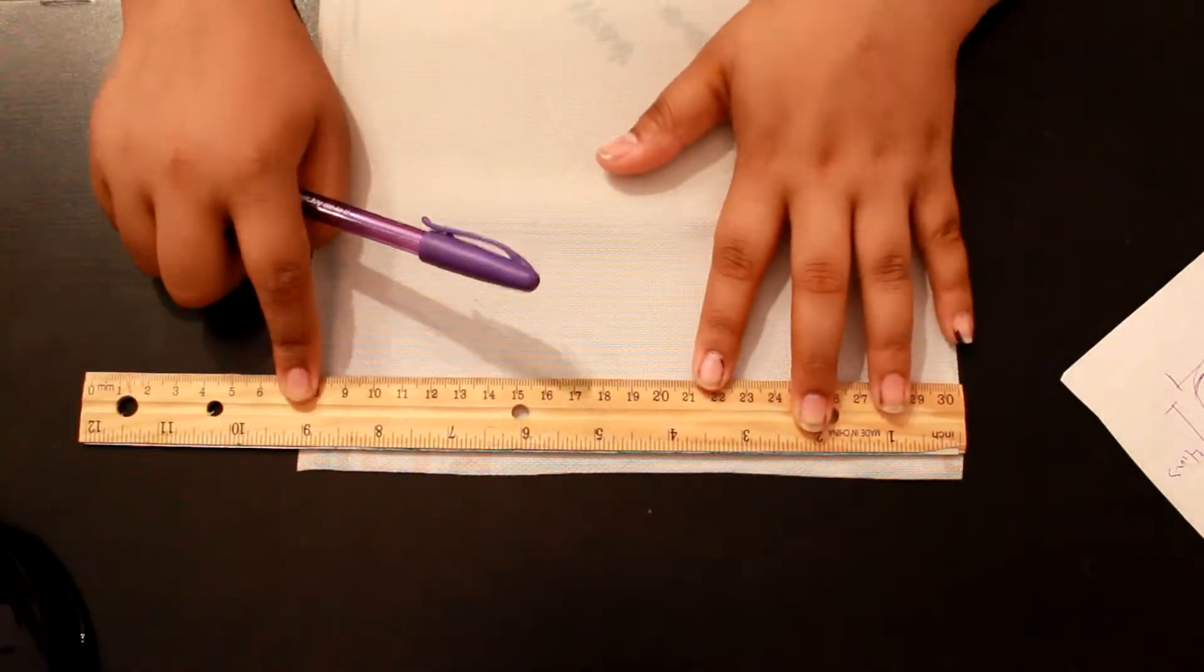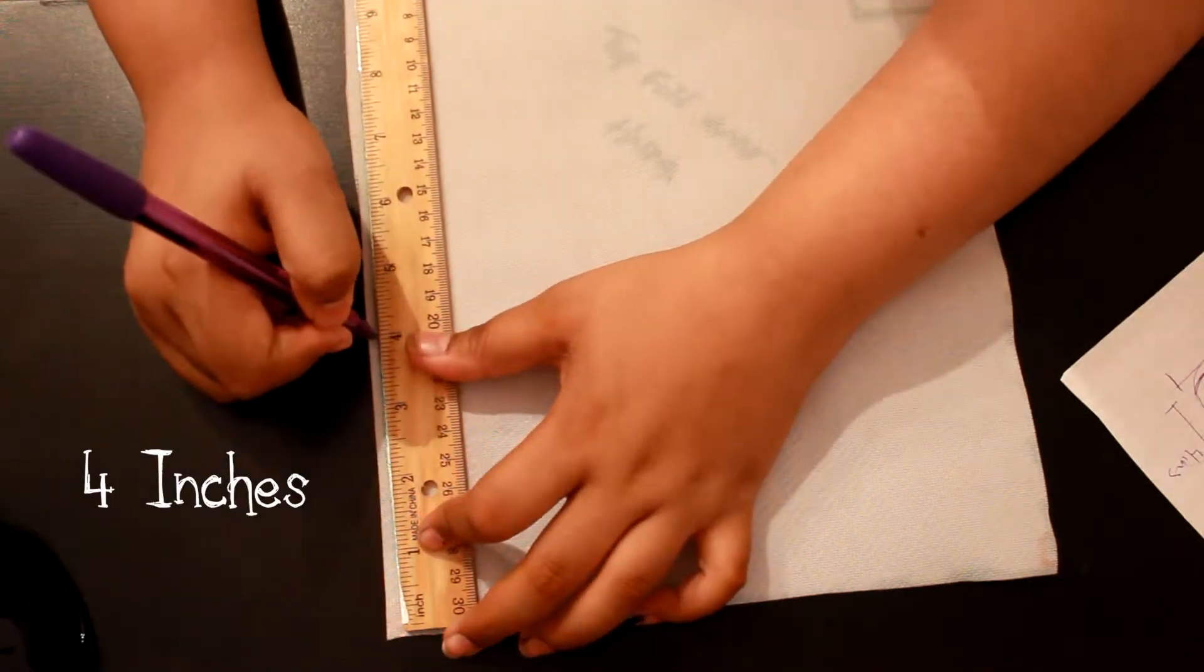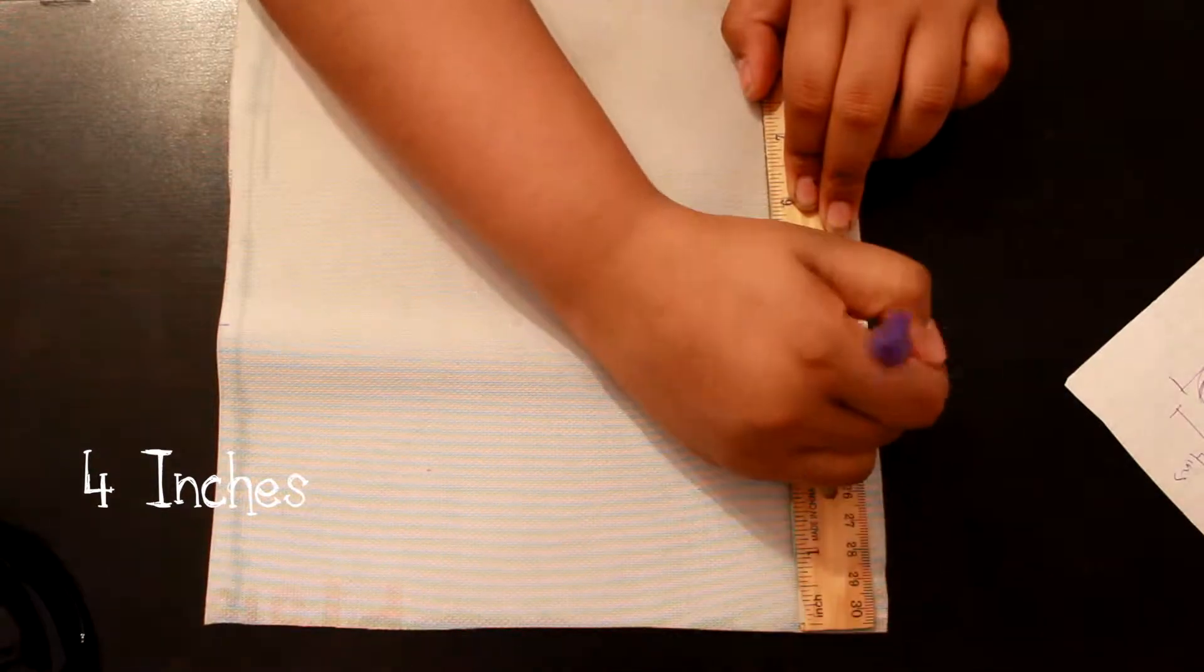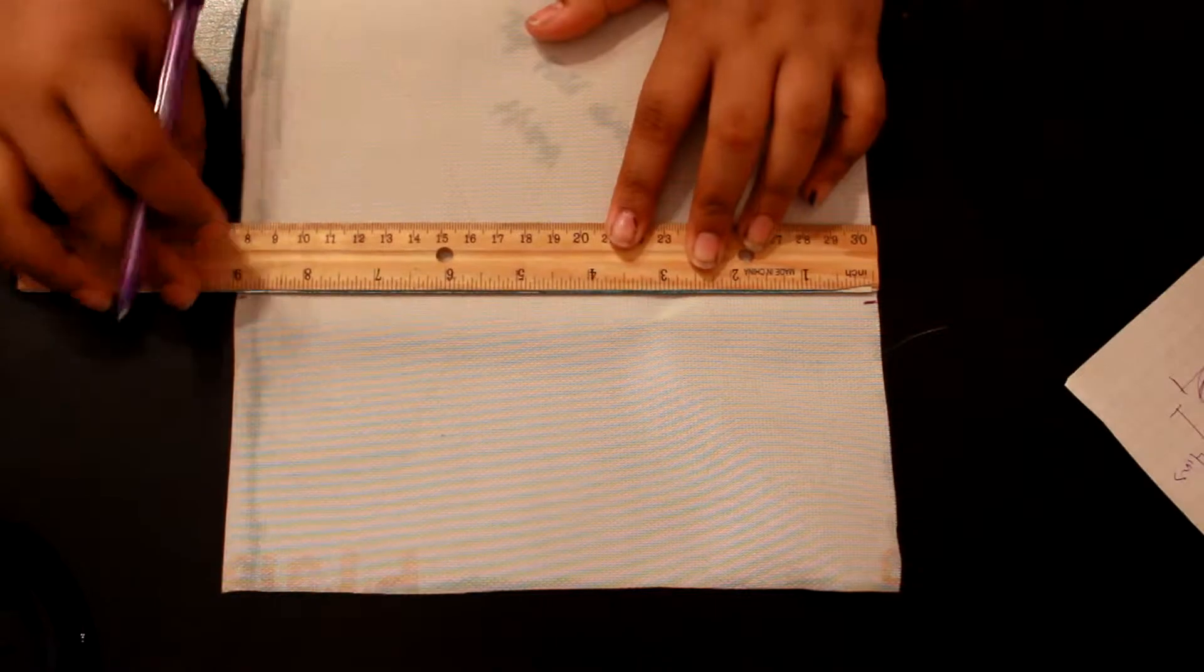And now you're just going to mark the measurements for the case. I made the case 4 inches long and 8 inches wide. And to make sure that both sides are even, I'm just going to mark the middle of the fabric.